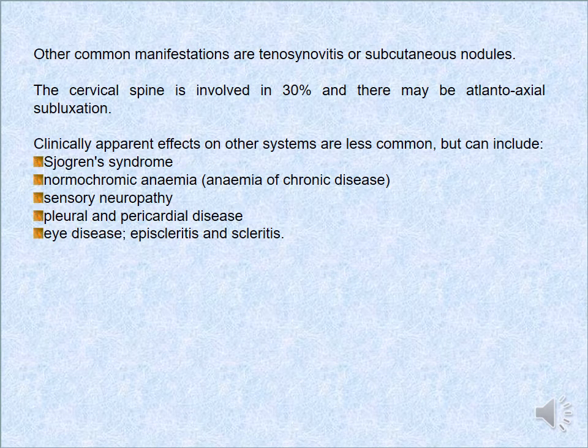Other common manifestations include tenosynovitis and subcutaneous nodules. The cervical spine is involved in 30% of cases, and there may be atlantoaxial subluxation. Clinically apparent effects on other systems include Sjögren's syndrome, normochromic chronic anaemia, sensory neuropathy, pleural and pericardial disease, and eye disease — including episcleritis and scleritis.